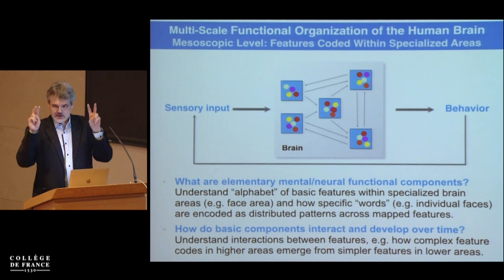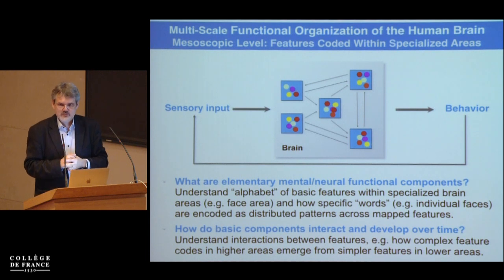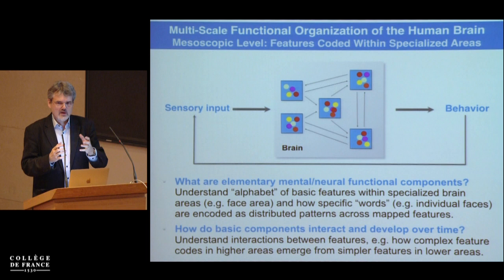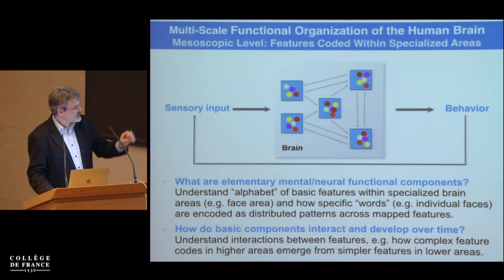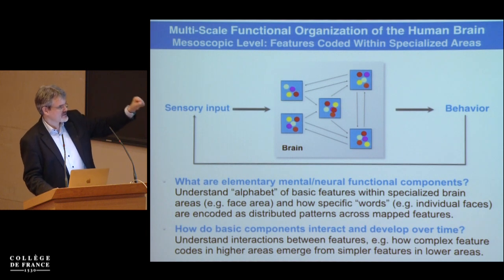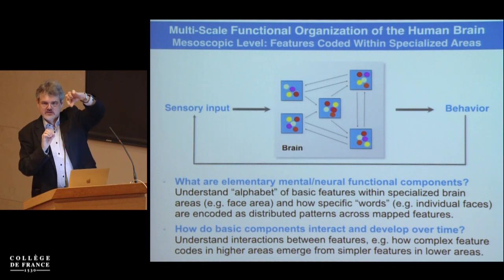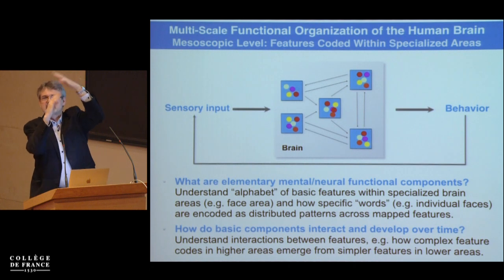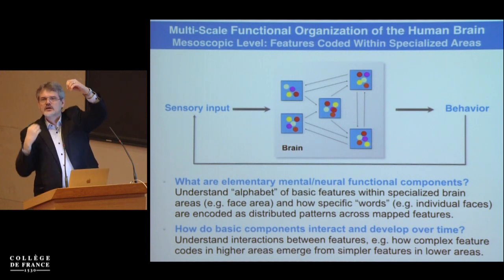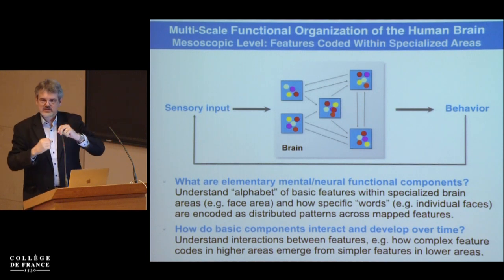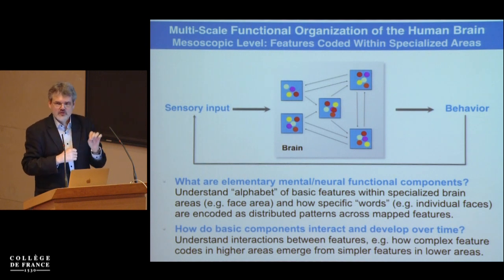This bridges cognitive neuroimaging with animal research, but not at the neuronal level — rather at a mesoscopic level, meaning columnar-like clusters and laminar separations. This helps us understand the 'alphabets' of visual features, as Tanaka showed in macaque monkeys, but also how features interact at the mesoscopic level. For example, from voxels in the visual cortex responding to a line conjunction, can we trace back to earlier visual cortex to find the driving inputs?